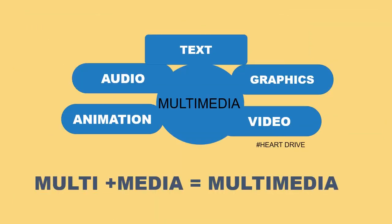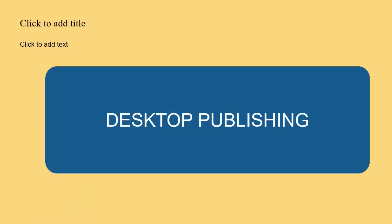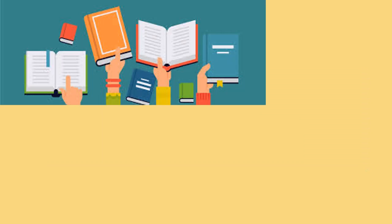So here comes the answer for multimedia. When you have all these five components — audio, text, graphics, animation, and video — in a single platform, then it is called multimedia. The definition of multimedia: multimedia allows the user to combine image, text, graphics, audio, and video onto a single platform.